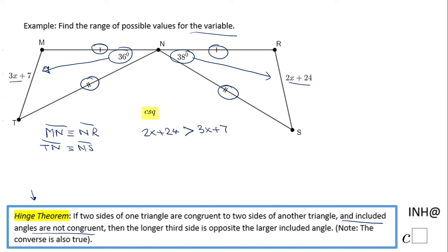This inequality will allow us to find something about x. I'm going to subtract 2x first. And I have 24 greater than—sorry, just x plus 7. So x plus 7, and subtract 7, and I have x less than 17.